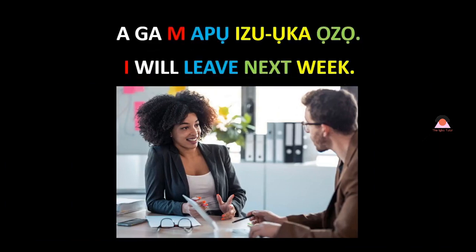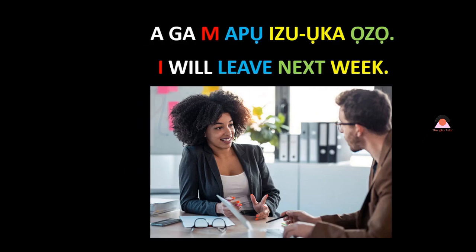We move on with the conversation. Next we have 'agam apo izuka ozo,' which means 'I will leave next week.' From the color, you can see that 'izuka' means 'week' in Igbo language. 'Izuka' means week, or native week. 'Izuka ozo' means next week. 'Agam apo izuka ozo' — I will leave next week.